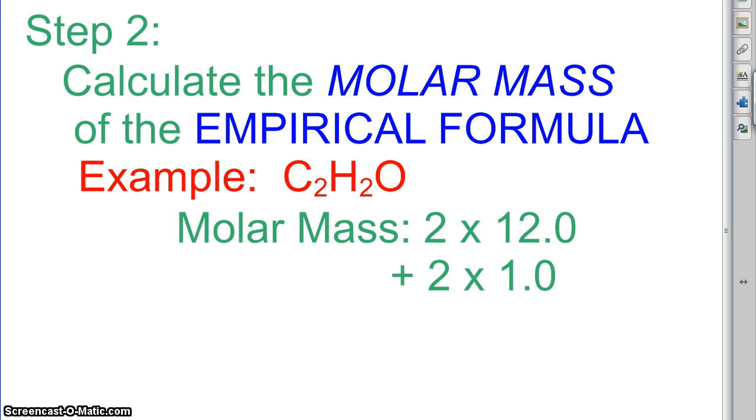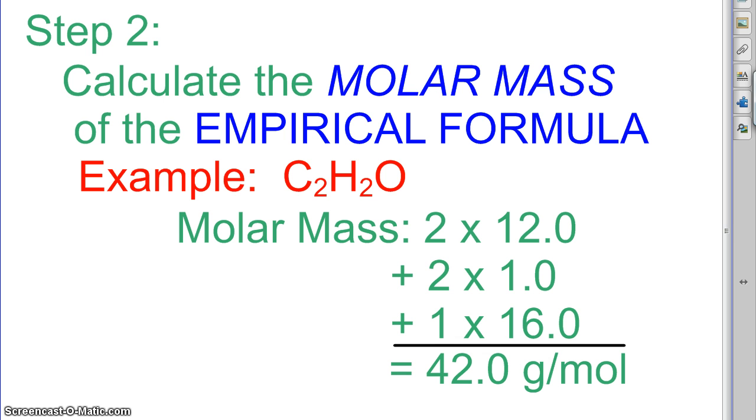We've got two carbons, so two twelves. We have two hydrogens, so two ones. And we've got one oxygen, which is 16, so we just add those all up. And we would get that number. 24, 26, yeah, there you go, 42.0 grams per mole.